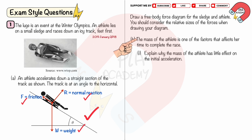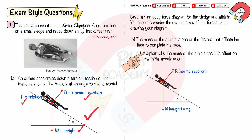Part b: The mass of the athlete is one of the factors affecting her time. Explain why mass has little effect on the initial acceleration. Initially, the frictional force is zero because the athlete has no velocity. We separate the weight into components: the component down the slope is mg sinθ and perpendicular to the slope is mg cosθ. Since ΣF = ma and ΣF = mg sinθ, the mass m cancels out, giving acceleration a = g sinθ.